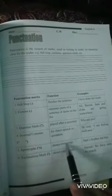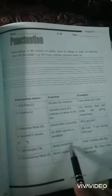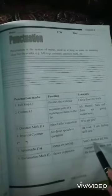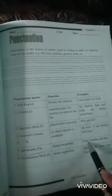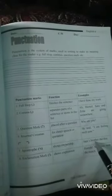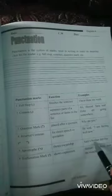Apostrophe. Function: shows ownership. When you have ownership, you will use an apostrophe mark. For example, Sara's brother. This shows the possession, so we add an apostrophe.